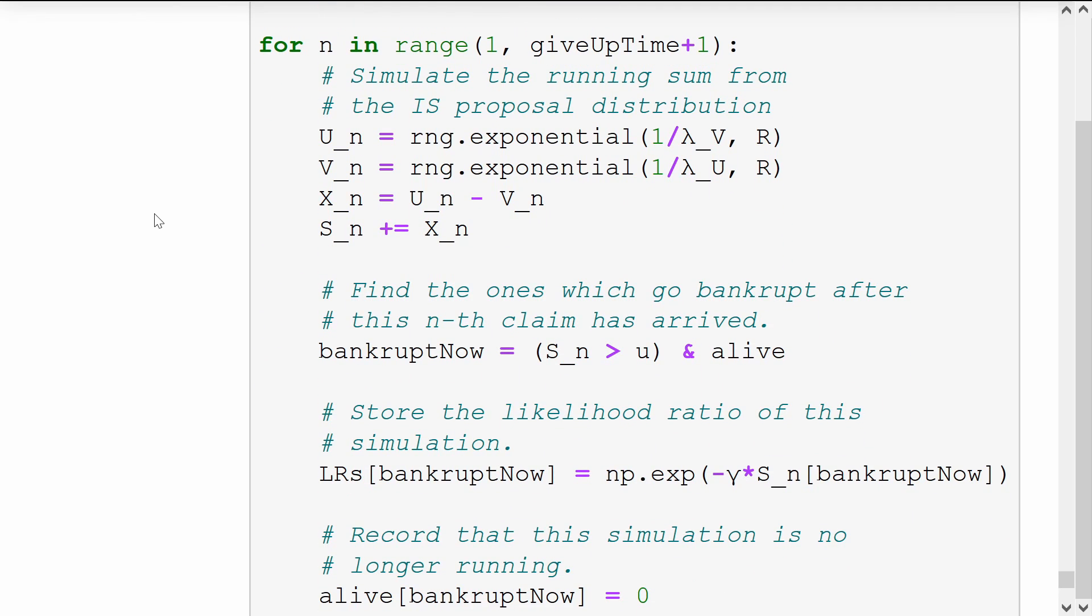Going claim by claim, we simulate U and V now using the parameters which have been switched. S_n is updated the same as before.